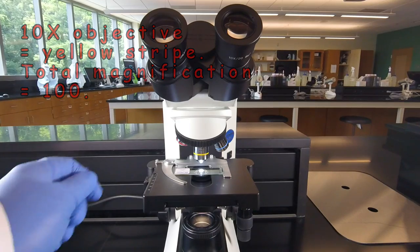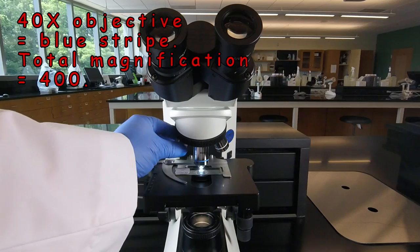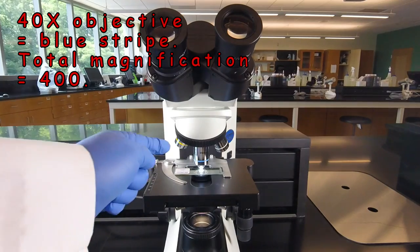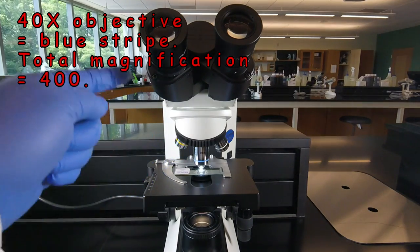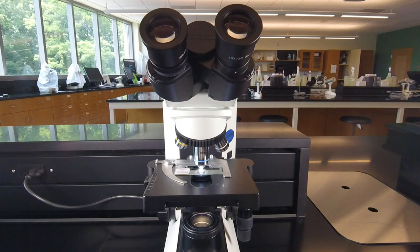If we rotate the blue striped objective into place, that's a 40x objective. And so the total magnification is 40 of the objective times 10 of the eyepiece. We're seeing the image 400 times its real size. That's sometimes called the high dry objective because we don't put it in a drop of oil.